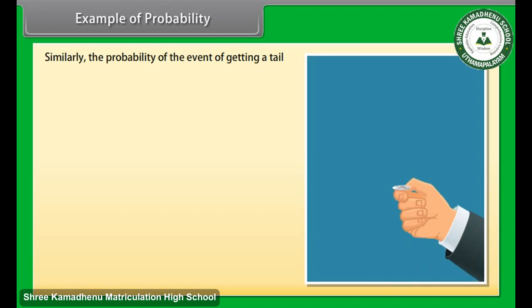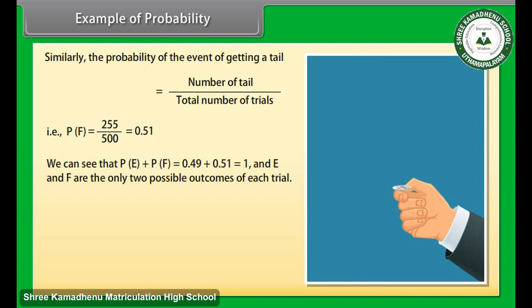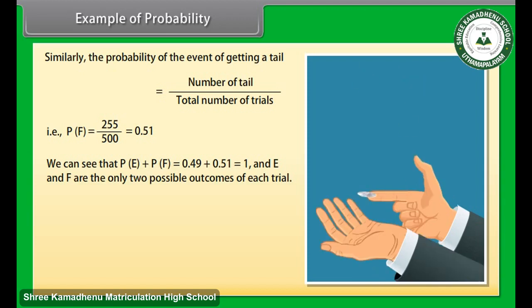Similarly, the probability of the event of getting a tail is equal to number of tails upon total number of trials. That is, P(F) equals 255 upon 500 equals 0.51. We can see that P(E) plus P(F) equals 0.49 plus 0.51 equals 1. And E and F are the only two possible outcomes of each trial.